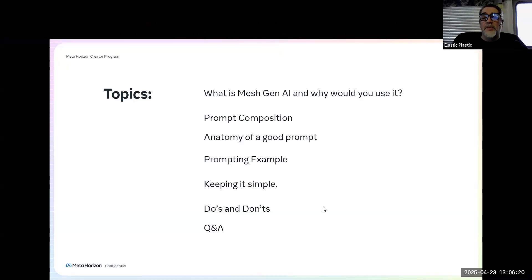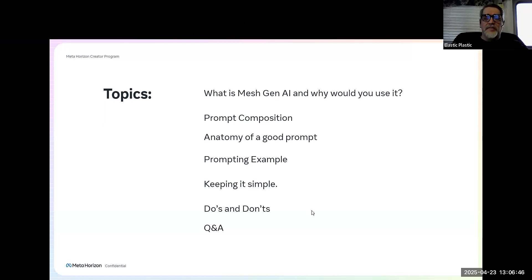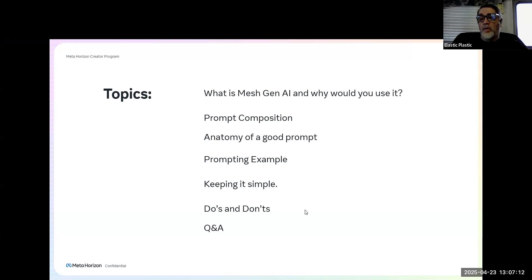Here are the topics we're going to go over today: what is mesh generation AI and why would you use it, a little bit about prompt composition, the anatomy of a good prompt, a prompting example, and why you can get a little lost going too hard with a prompt — and how to use Occam's razor to keep it simple while still exploring the depths of what AI can do. And then I have a few do's and don'ts — they're just guidelines, everything is guidelines here. Take it with a grain of salt. And then we'll have a little Q&A at the end.